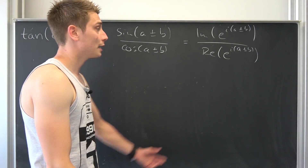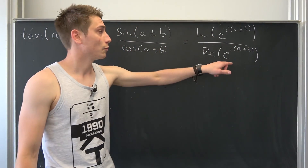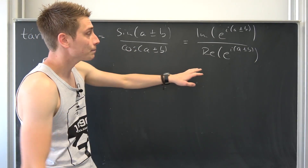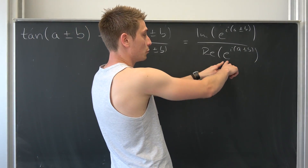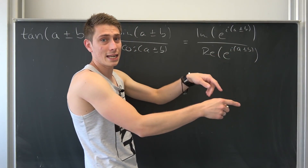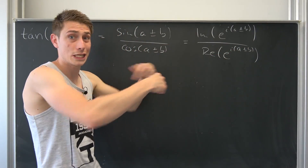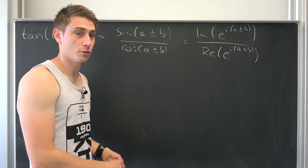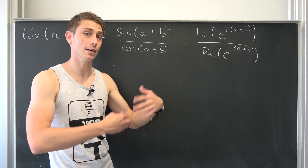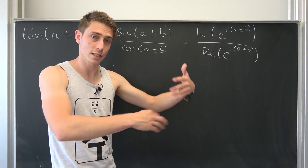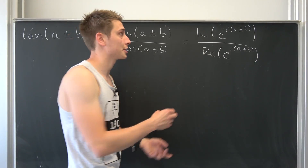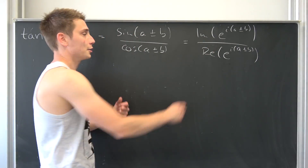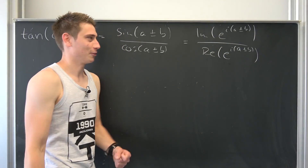What we can do is write this as the real part of e^(ia) times e^(±ib). We can take this product, distribute everything, and then take the real and imaginary parts respectively.